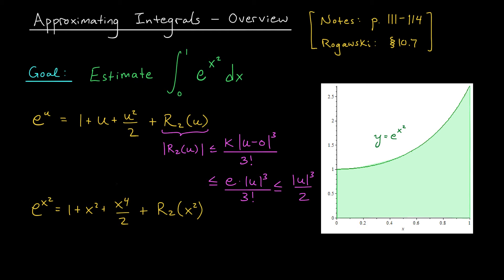But what about the remainder for e to the x squared? Well, to go from this remainder to this remainder, we need to replace u with x squared. And if I do that, I find that the absolute value of r2 of x squared is going to be bounded above by x to the 6 divided by 2. Okay, now we're in business. We know that our function is equal to this fourth degree polynomial plus some error term, where the error in magnitude is no more than x to the 6 divided by 2.